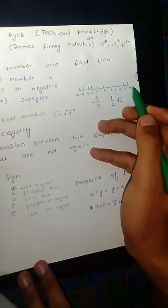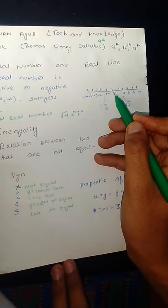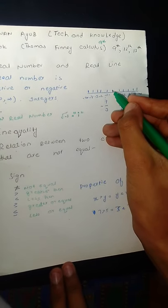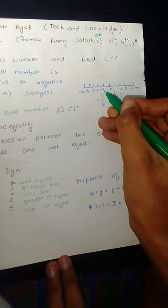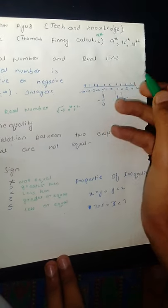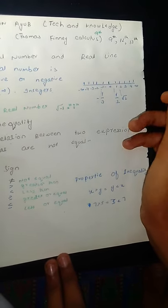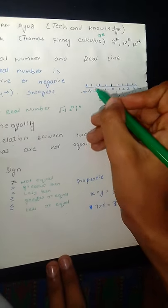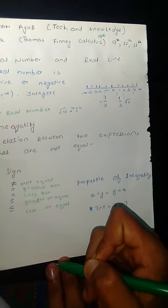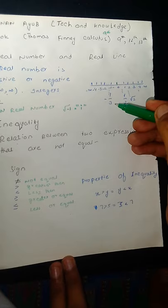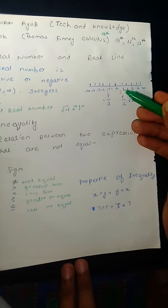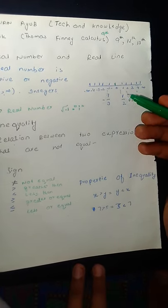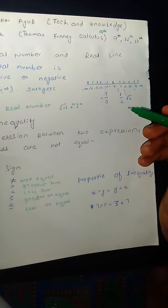The number line goes from minus infinity to infinity with 0 at the center. From this side we have minus 1, minus 2, minus 3. This side is 1, 2, 3, 4, 5 up to infinity for positive numbers and this side is negative numbers. This line shows fractions like minus 1 over 3, or 1 over 2.